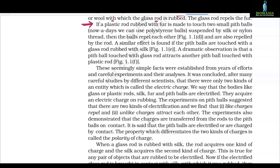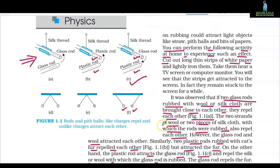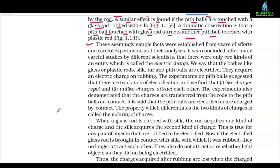If a plastic rod rubbed with fur is made to touch two small pith balls — nowadays we can use polystyrene balls — suspended by silk or nylon insulating thread, the balls repel each other and are also repelled by the rod. A similar effect is found if pith balls are touched with a glass rod rubbed with silk. A dramatic observation is that a pith ball touched with a glass rod attracts another pith ball touched with a plastic rod, as shown in figure 1.1.